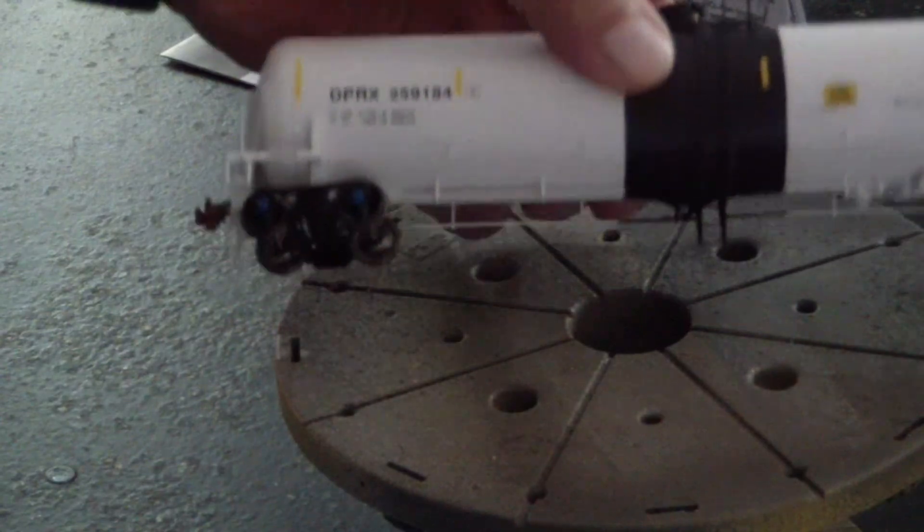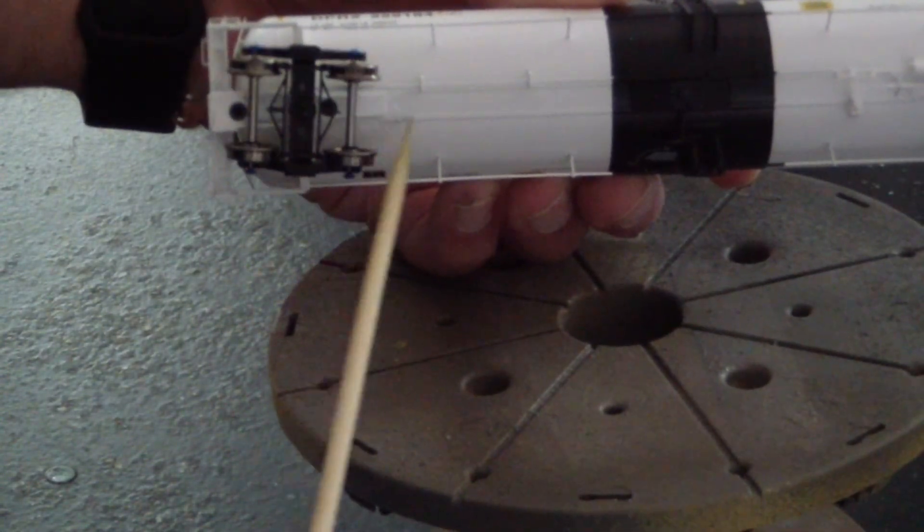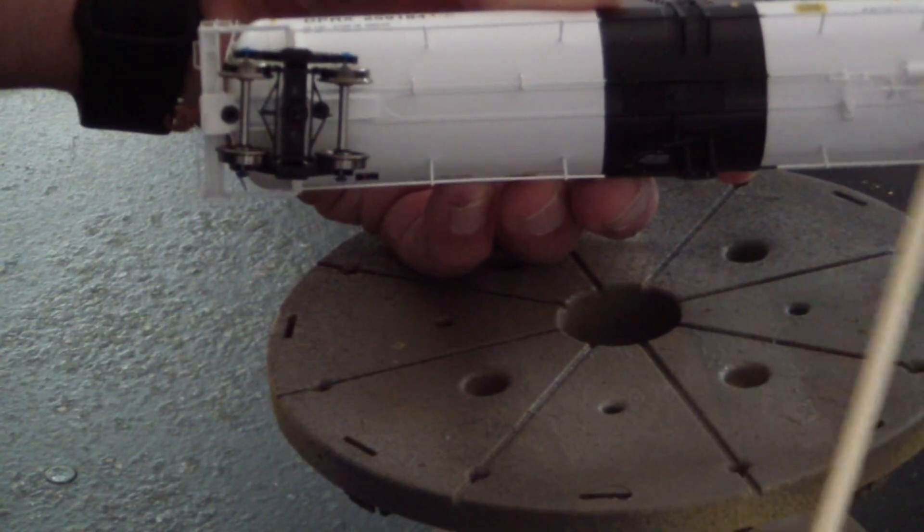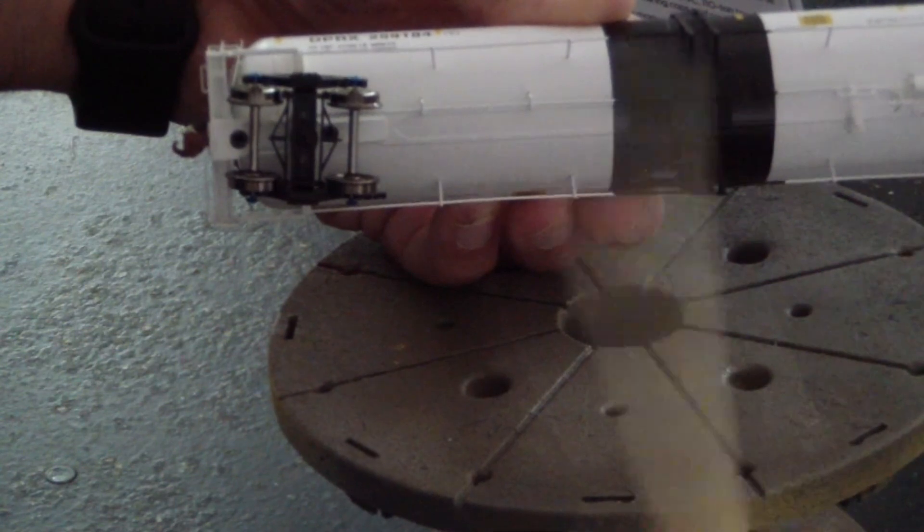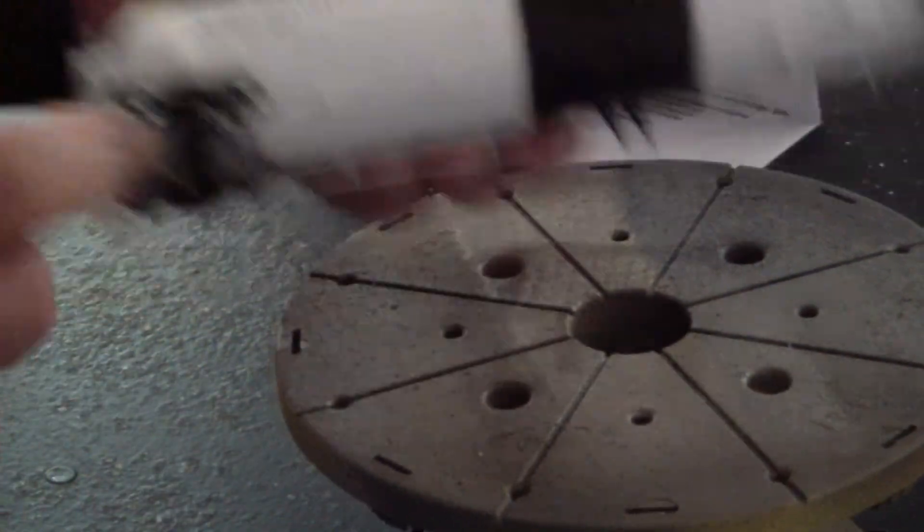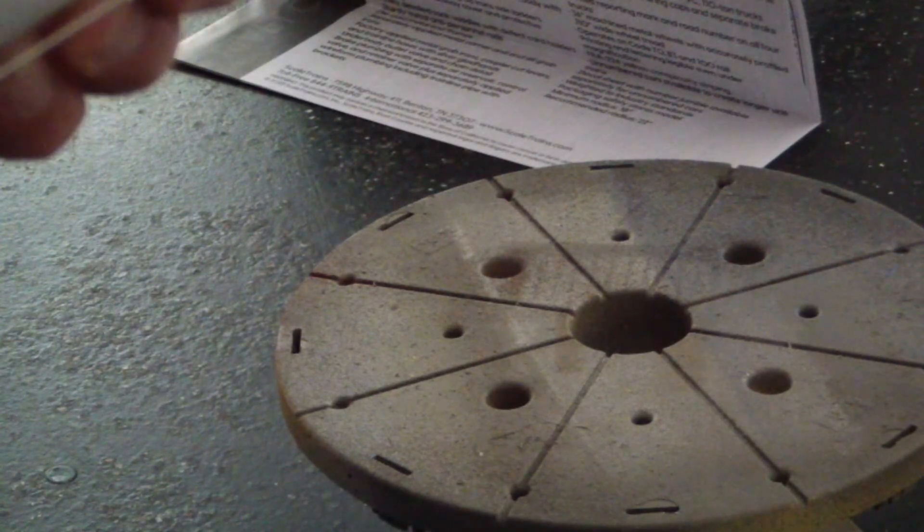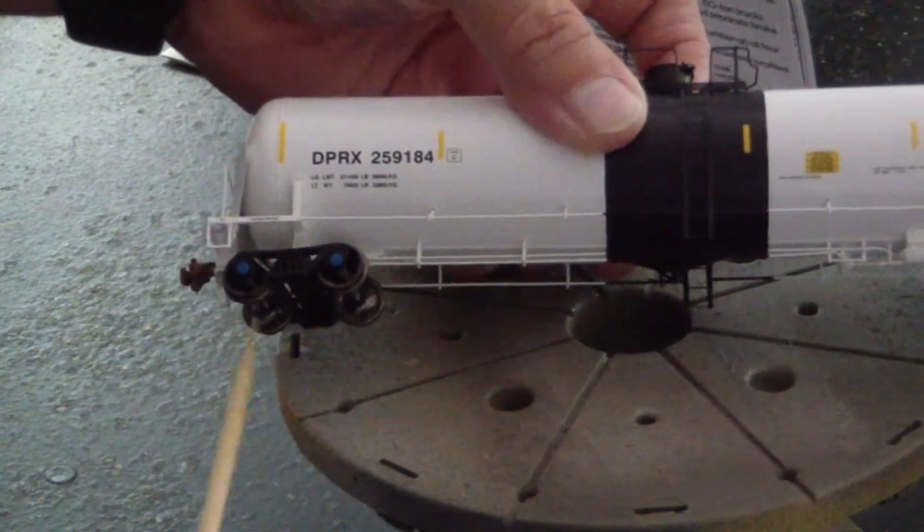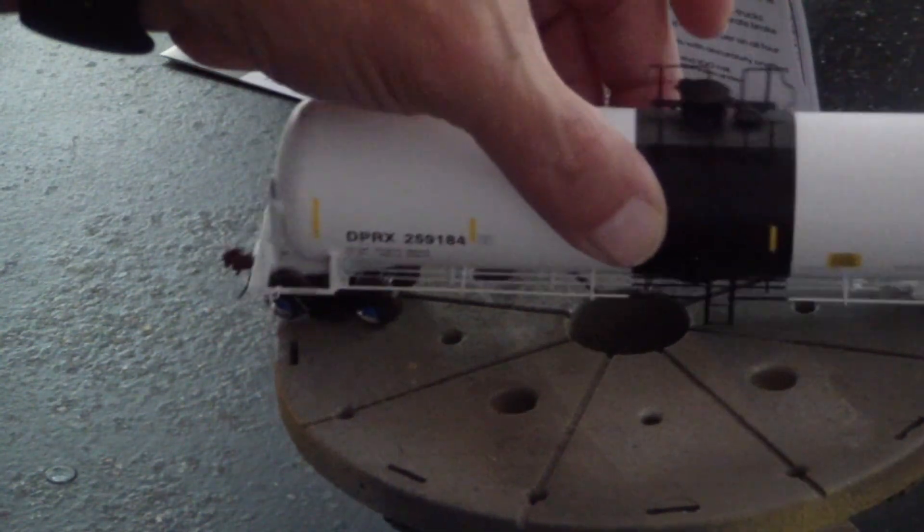On the bottom side we have very nice detail on all the piping going underneath. We have metal wheels. The roller bearings do not turn, which they're here. Yeah, like I said, you get four extra ones.